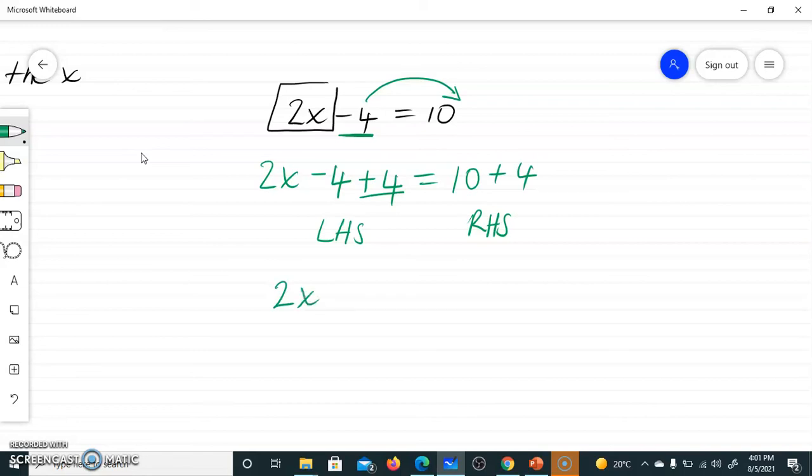Therefore, you have 2x is equal to 10 plus 4, which is 2x which is equal to 14. And x is equal to 14 divided by 2, which is equal to 7.